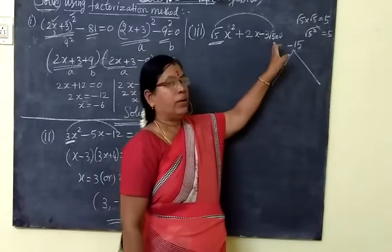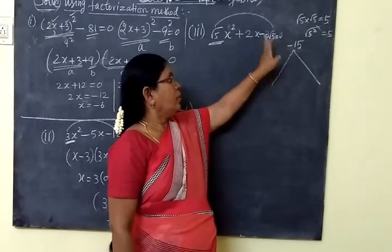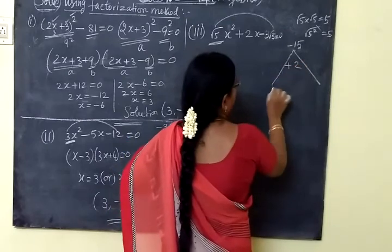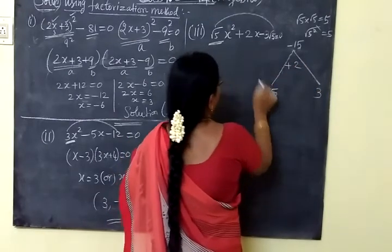Root 5 into root 5, 5 and 3 is minus. So minus. This is the answer. So 5x squared equal to 3. 5x squared equal to 3.